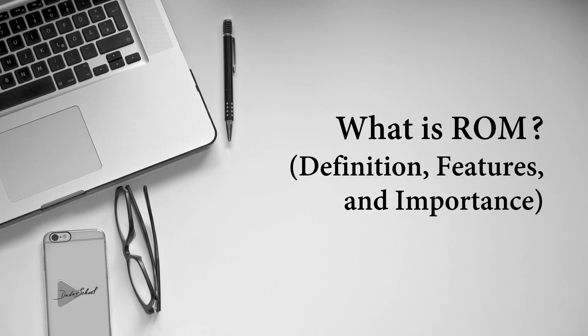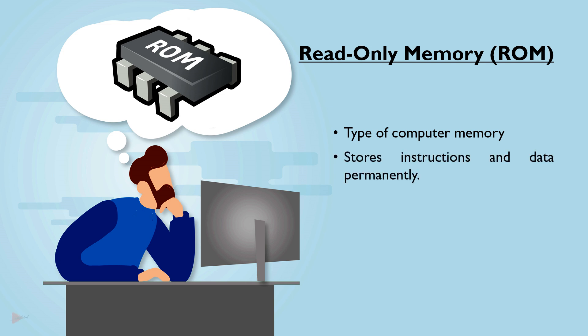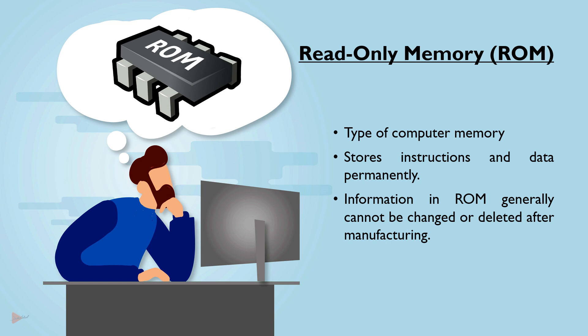Welcome. In this video we are going to talk about ROM. ROM, or read-only memory, is a type of computer memory that stores instructions and data permanently. This information generally cannot be changed or deleted after the device is manufactured. Think of it like a set of pre-written instructions that come with a machine.